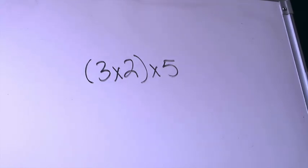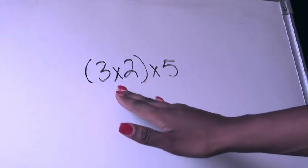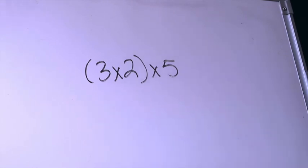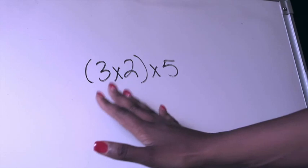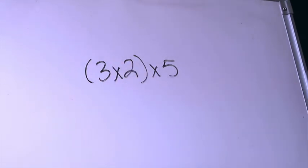As this problem is currently written, we have to solve 3×2 first and then multiply that product by 5. But let's say that I am not comfortable doing this first. Maybe I don't know my threes or I just don't feel confident in doing that first. I can go ahead and change the grouping of this problem.